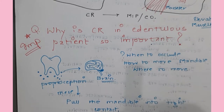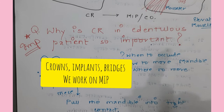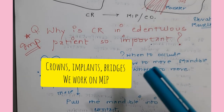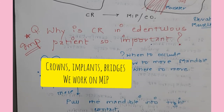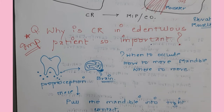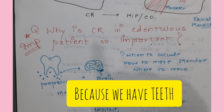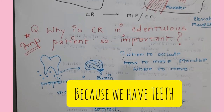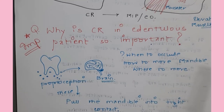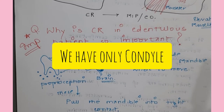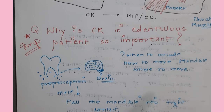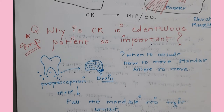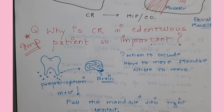We use centric relation as a guide in edentulous patients, whereas in dentulous patients we use maximum intercuspation. For a single crown or one or two implants, we do the work in maximum intercuspation only. But when maximum teeth are missing, teeth are eroded or attrited, or we give a complete denture, or in long-span FPD or RPD cases where the majority of teeth are missing, then we have to record and work in centric relation.